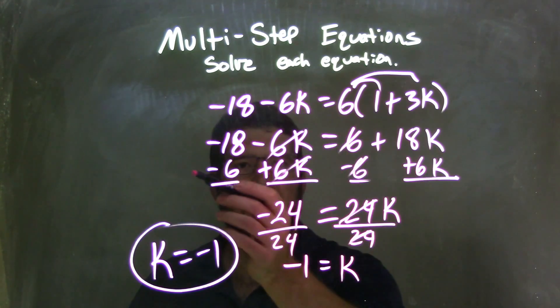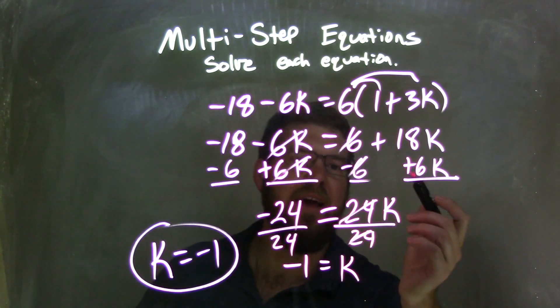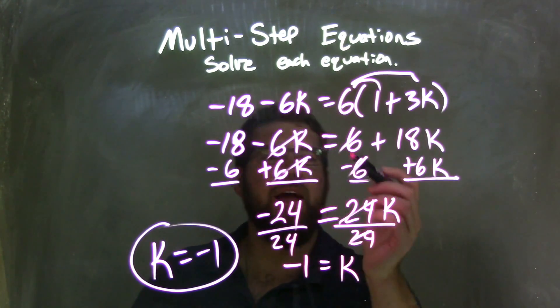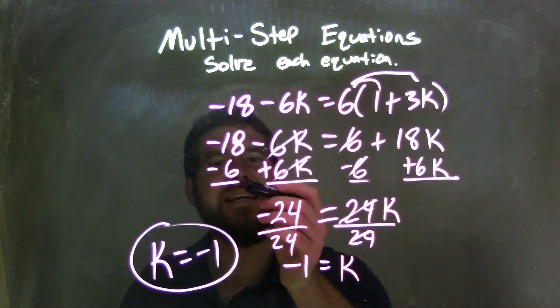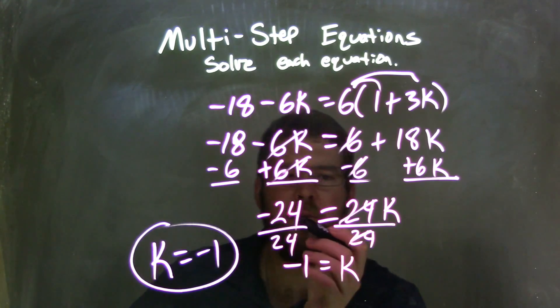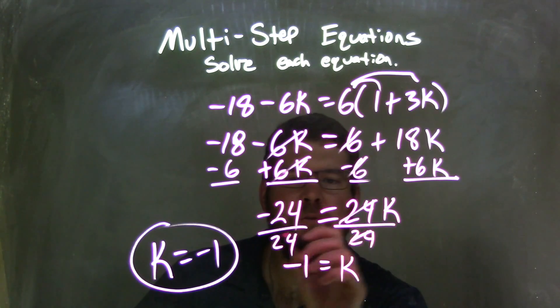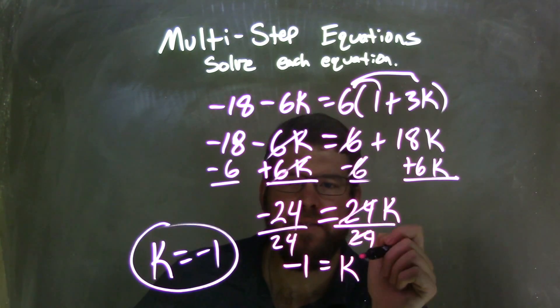I then combined my like terms, bringing k's to the right and numbers to the left. By doing so, I added 6k, giving me 18k plus 6k, which is 24k. And negative 18 minus 6 came out to negative 24. Dividing 24 on both sides leaves me with just k.